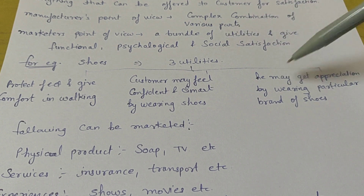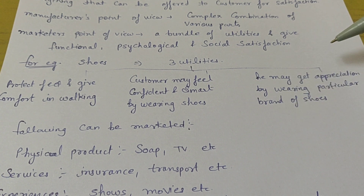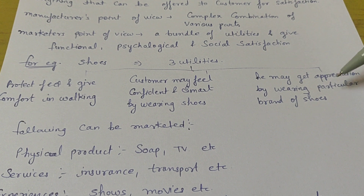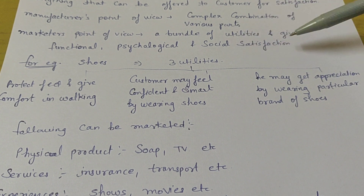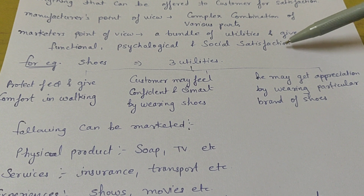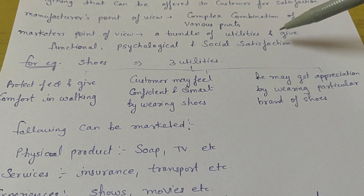Social satisfaction means the customer may get appreciation by wearing a particular brand of shoes. For example, you wear branded shoes and go to your friend circle, and your friends appreciate it — like Woodland shoes, they are very good. So you get satisfaction from your friends and your group. These are the three types of satisfaction from a product according to a marketer.